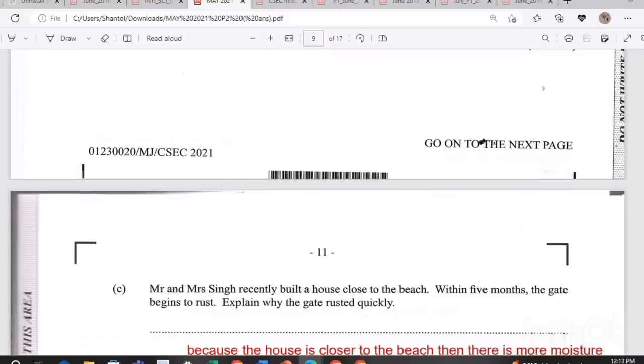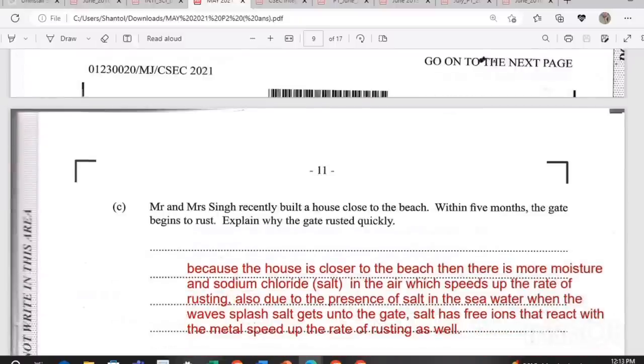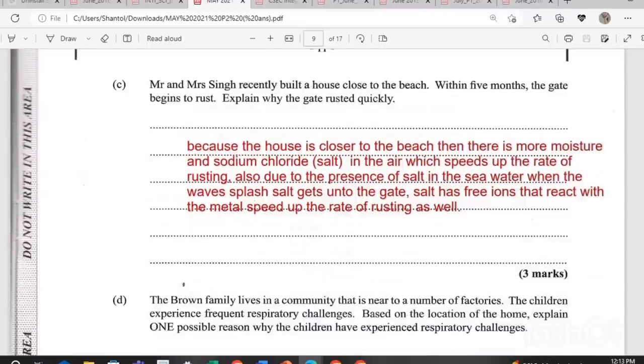Recommend two pieces of protective equipment that Mr. Allen could use while handling this chemical. Gloves and goggles can be worn. Mr. and Mrs. Singh recently built a house close to the beach. Within five months, the gate began to rust. Explain why the gate rusted so quickly. Because the house is closer to the beach, there is more moisture and sodium chloride in the air which speeds up the rate of rusting. Also due to the presence of salt in the seawater, when the waves splash, salt gets onto the gate and salt has free ions that react with the metal and speeds up the rate of rusting.